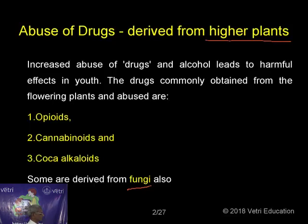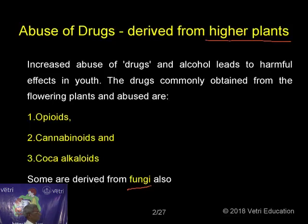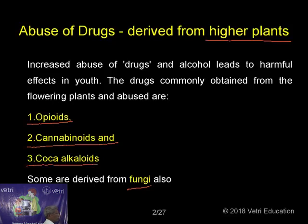From the higher plants, these drugs are derived, and we have classified them into three groups: namely opioids, cannabinoids, and coca-alkaloids. The increased abuse of drugs and alcohol leads to harmful effects in youth. The drugs commonly obtained from flowering plants and abused are: opioids, cannabinoids, and cocoa-alkaloids. Some drugs are also derived from fungi.